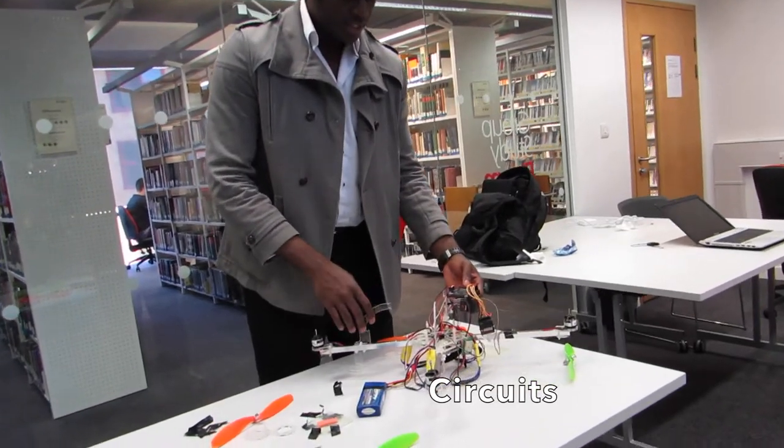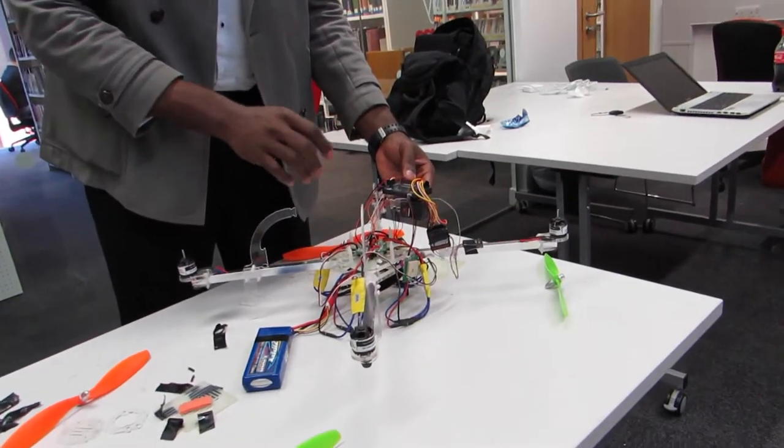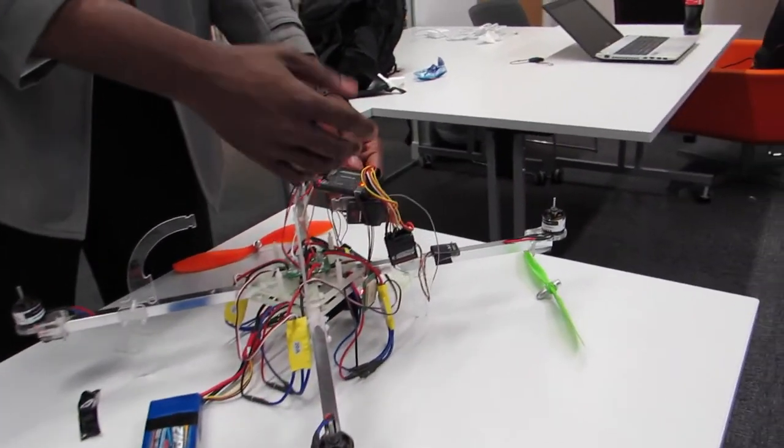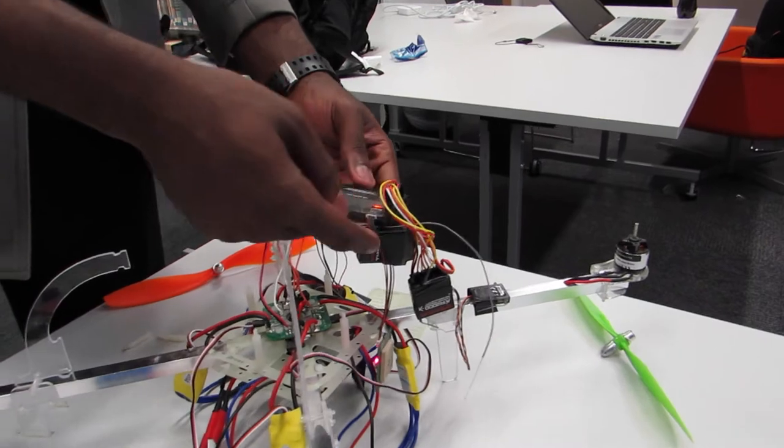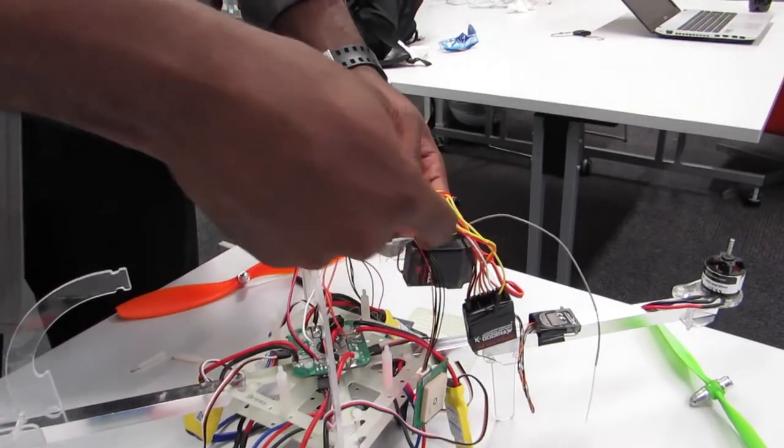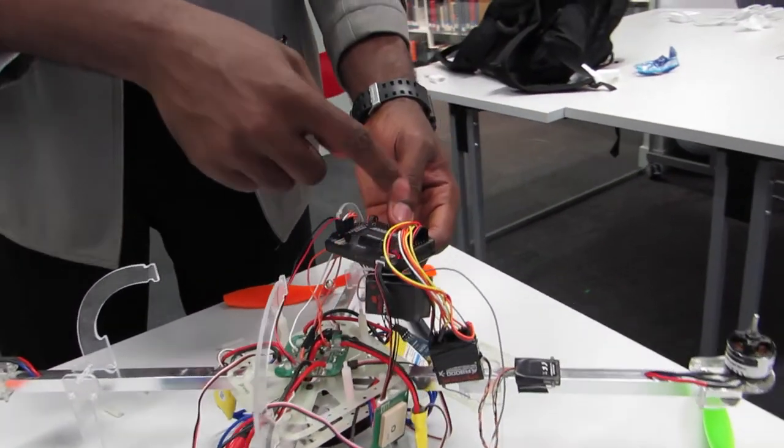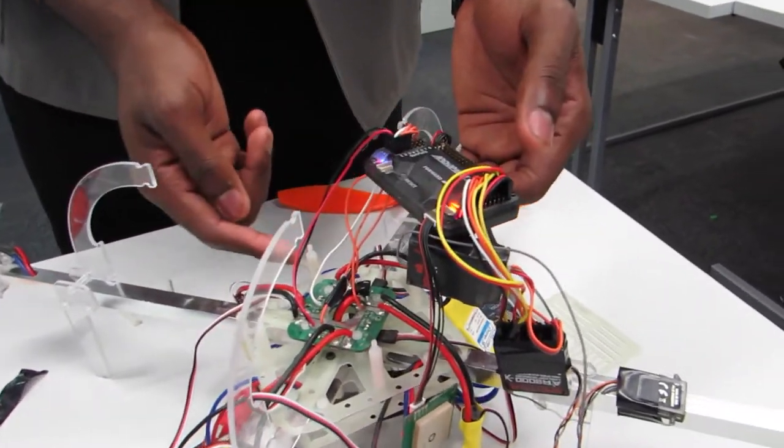The QuadroDrone is comprised of two major modules. Firstly, the Arduino module. This is responsible for receiving signals from the radio, processing the signal based on information from the accelerometer and GPS, and finally outputting the refined signals to the motors.